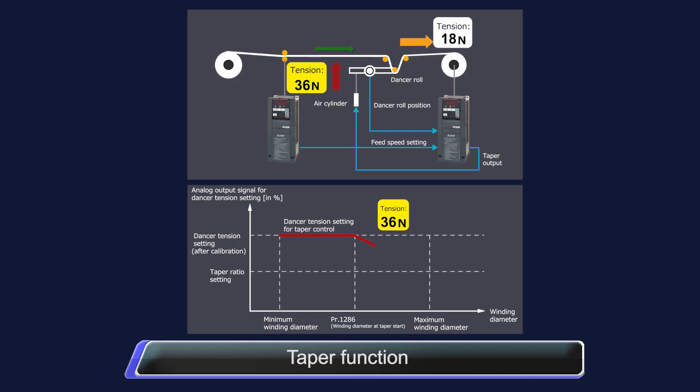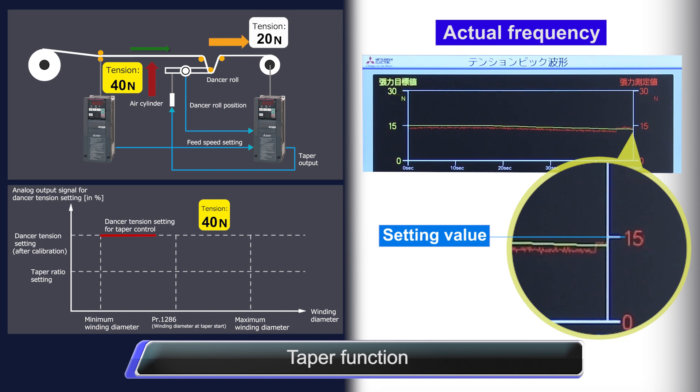The taper function prevents wrinkles or malformation caused by an increase in roll diameter by adjusting tension as the diameter of the roll changes.